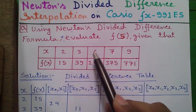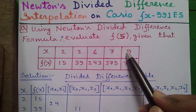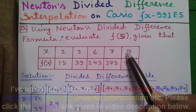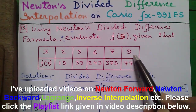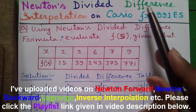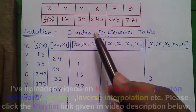But if there is even gapping between each term of x, we can use Newton's forward interpolation formula, Newton's backward interpolation formula, or the Lagrange interpolation formula. But in this type of table, we have to use Newton's divided difference formula. So let's start.